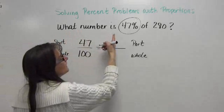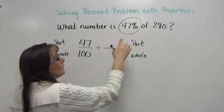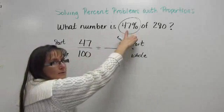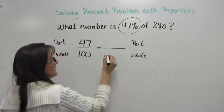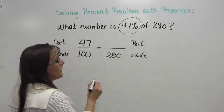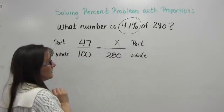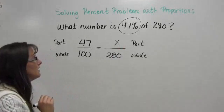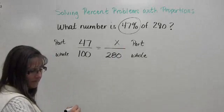It says, what number is 47% of 280? Well, I will always take the percent out of the whole number. That means that 280 has to be my whole and I am looking for my part. So I will put x on top and 280 on bottom. And now I'm ready to cross multiply and divide.